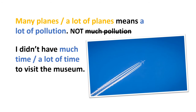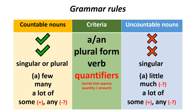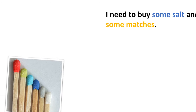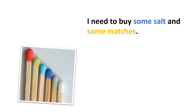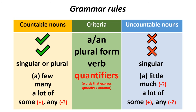I didn't have much time or a lot of time to visit the museum. Finally, 'some' and 'any' can be used with both countable and uncountable nouns. 'Some' is used in positive sentences, but 'any' in questions and negatives. For example: 'I need to buy some salt and some matches. Do you have any salt? Do you have any matches?' That's the gist of what grammar you need to know to use countable and uncountable nouns correctly.